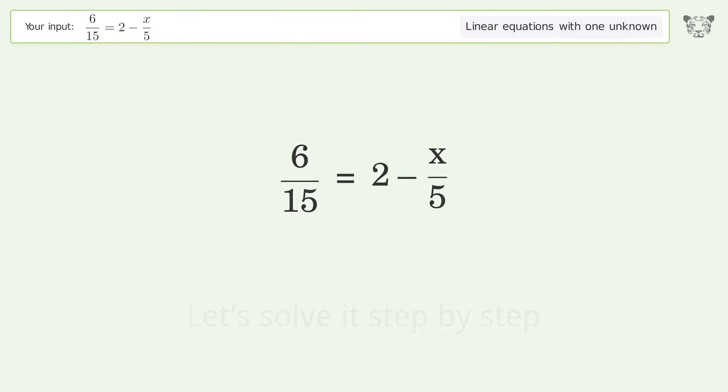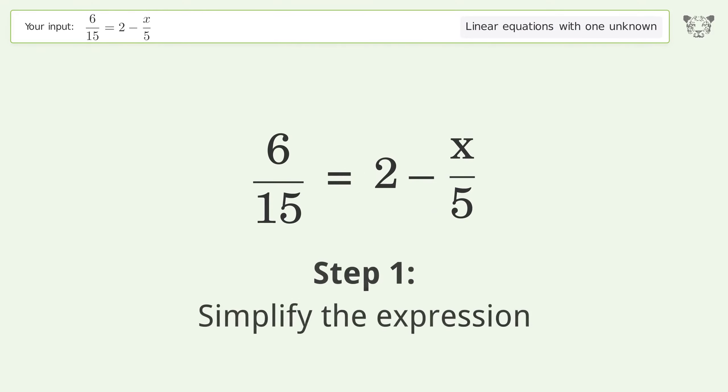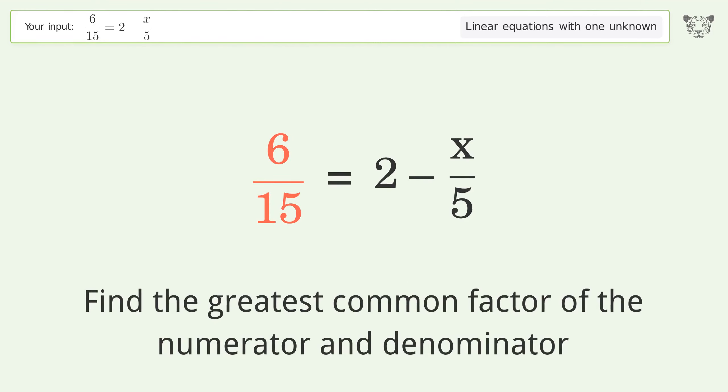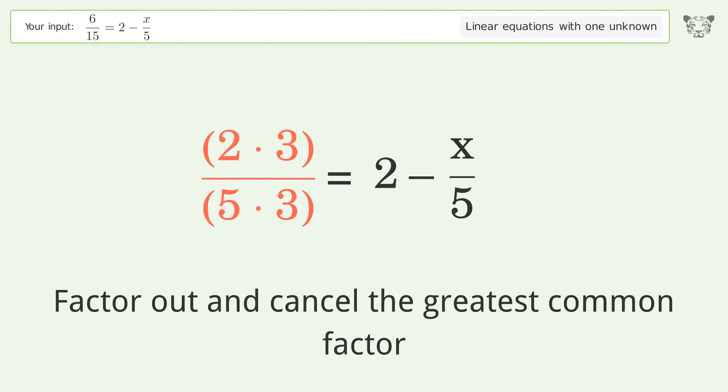Let's solve it step by step. Simplify the expression. Find the greatest common factor of the numerator and denominator. Factor out and cancel the greatest common factor.